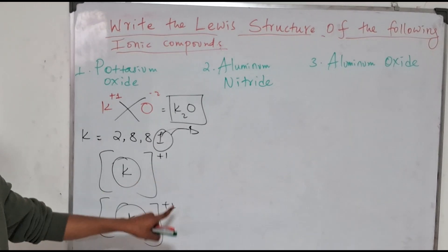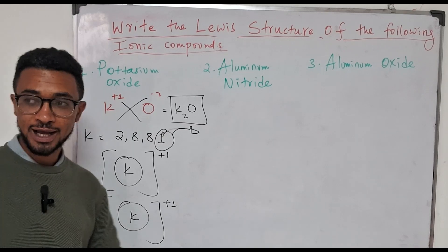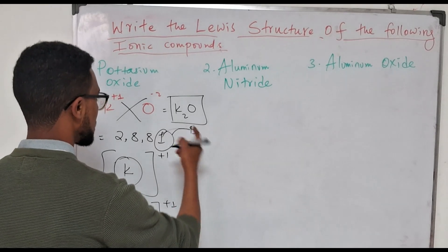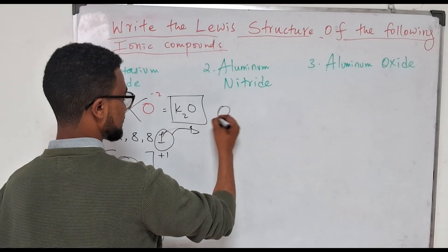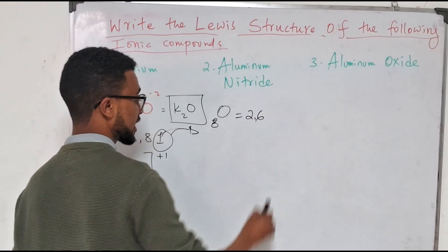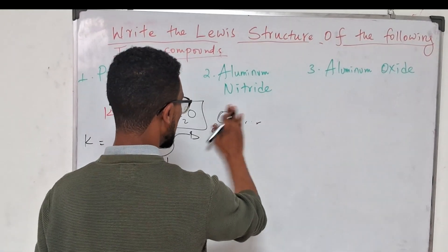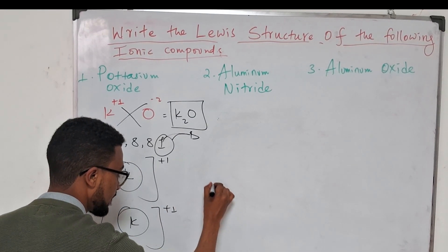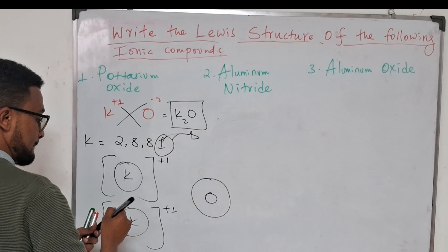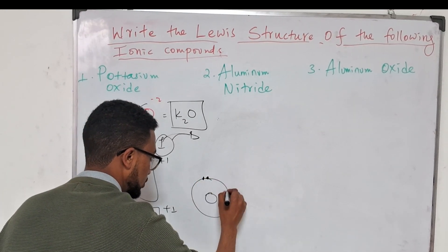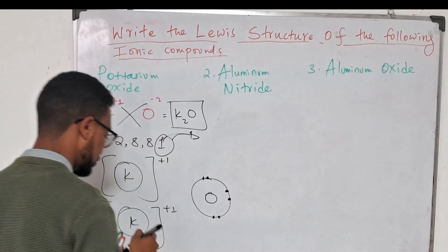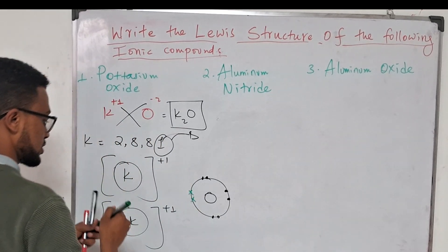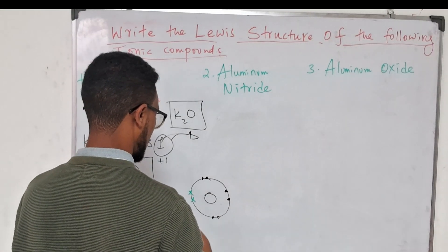The two potassium ions each have a +1 charge and one oxygen atom needs to gain two electrons to become stable. Oxygen originally has a 2, 6 configuration, but after gaining two electrons it will have a 2, 8 configuration. Originally oxygen had six electrons in its outer shell, but now it has gained two electrons, giving oxygen a 2- charge.